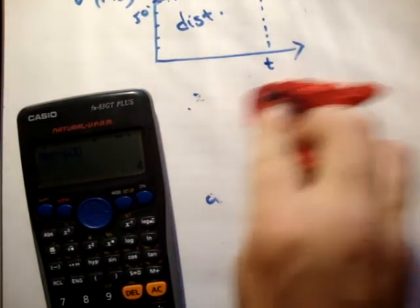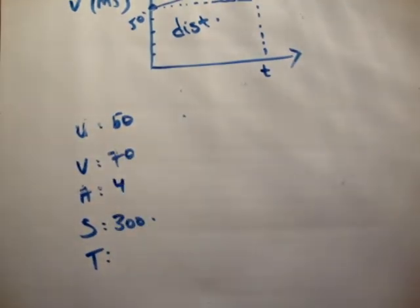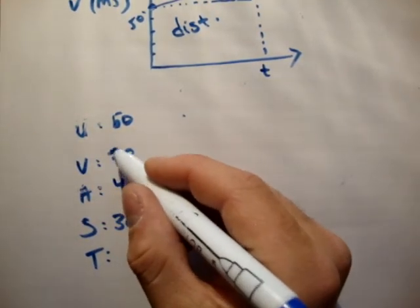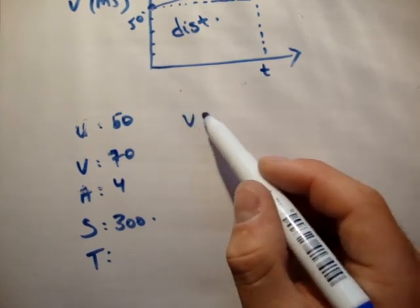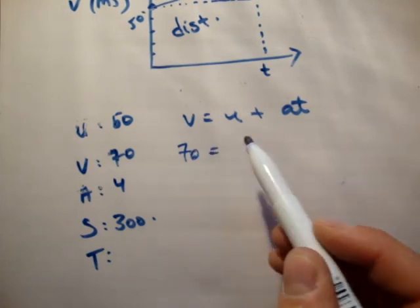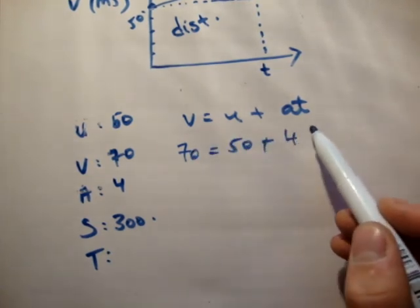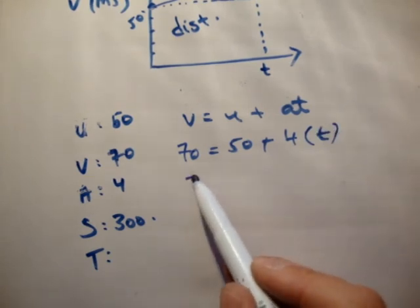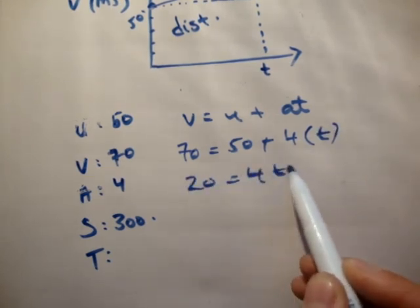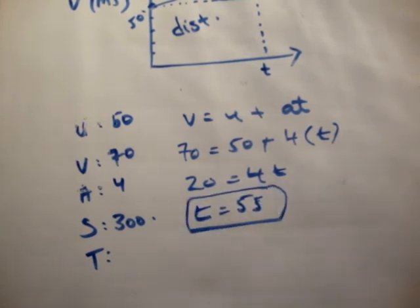So next, we need to get the time taken. So we know that a is 4. Once again we can use any of the other formulae. v equals u plus at is what I'm going to use. So 70 equals 50 plus 4 times t. Therefore 20 equals 4t. And t equals 5 seconds. Check that at the back of the book again. That's correct.